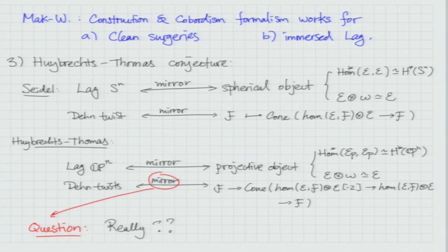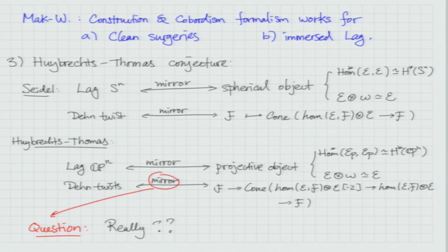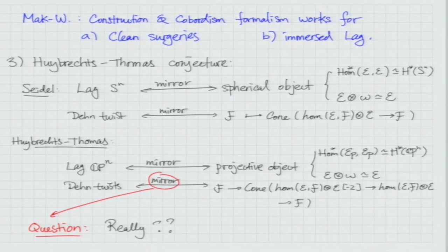The third part of our background is the Huybrechts-Thomas conjecture. If you look back at Seidel's picture, what he established is that a Lagrangian S^n, under mirror symmetry philosophy — because when we look at a symplectic manifold it doesn't necessarily mirror to an algebraic variety on the B side — should philosophically be mirror to some sort of spherical object at the homological level. And doing the Lagrangian Dehn twist along a Lagrangian S^n should correspondingly be mirror to the so-called spherical twist on the B side.